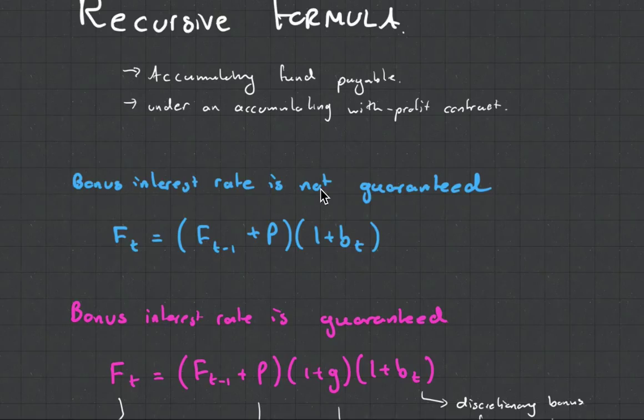When the bonus interest rate is not guaranteed, it's just your last bonus plus the premium and then add the bonus on afterwards.